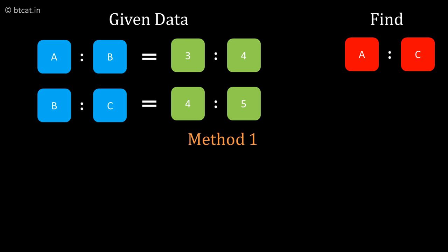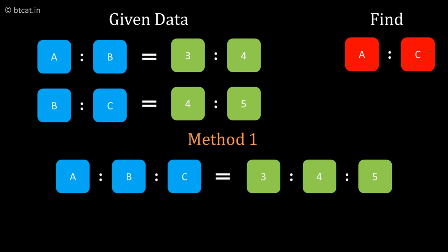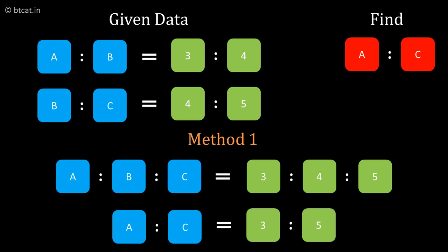One method is we can directly find A to B to C, which is 3 to 4 to 5, because B is common in both the ratios and is the same. Directly we can get A to C from here, which is 3 to 5.